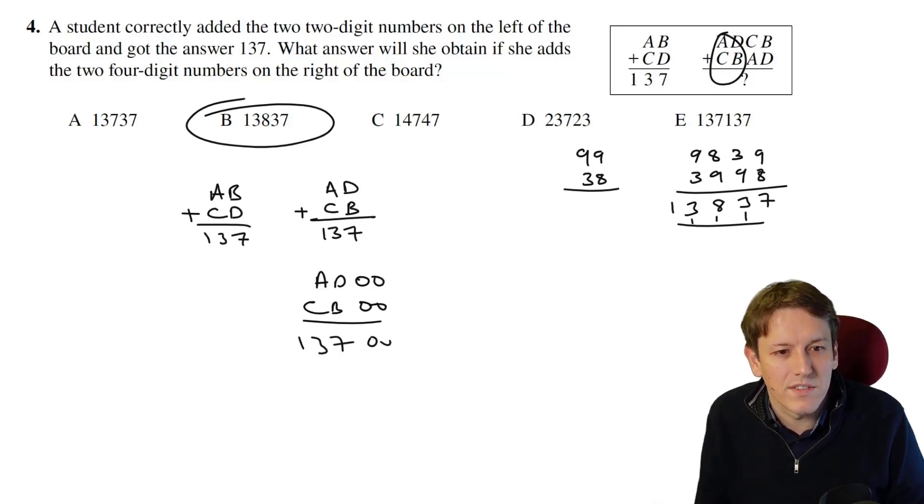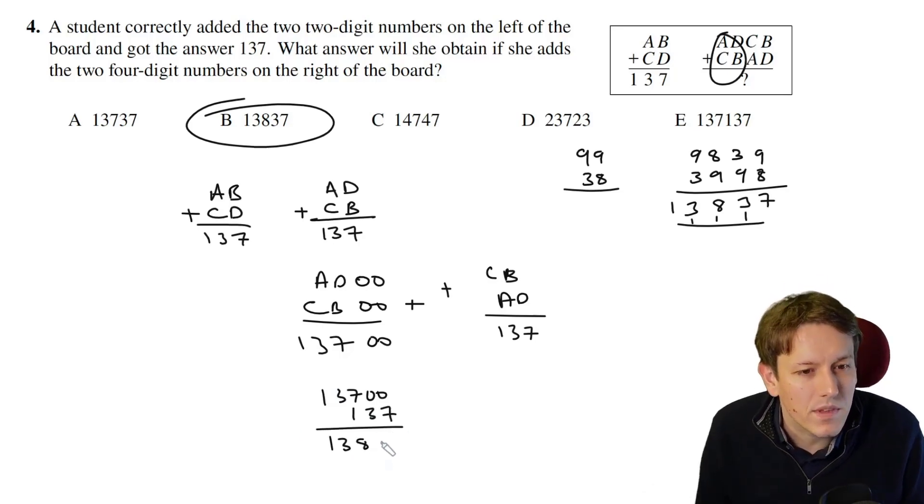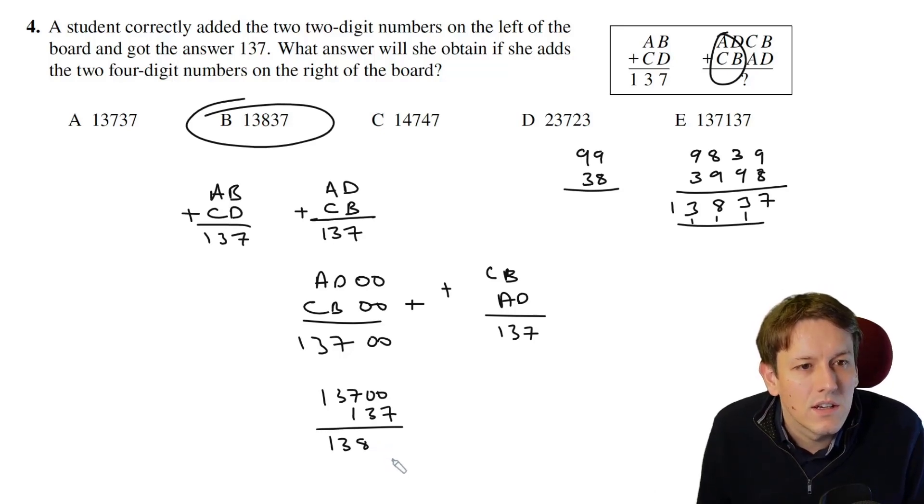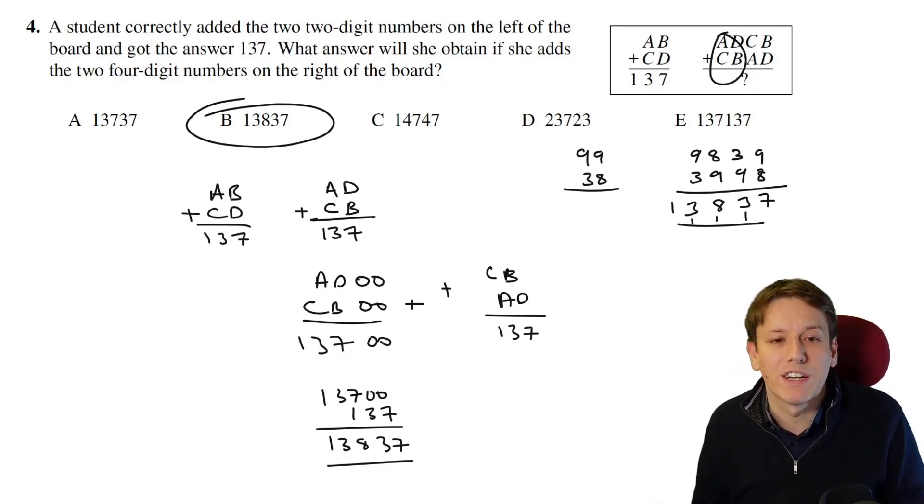This gives us 13700, and here we're adding those numbers together and also adding CB plus AD. We know that CB plus AD is just 137, so the answer, whatever values we take here, must be 13700 plus 137, which again gives us 13837. So the logic can be done more rigorously, but for a math challenge you just want to get the answer and move on as quickly as you can.